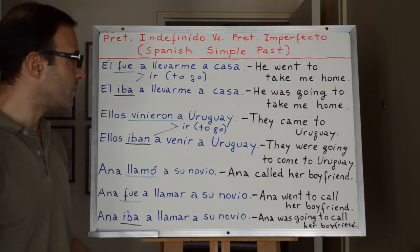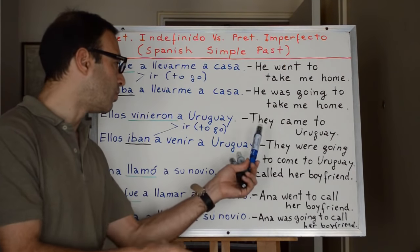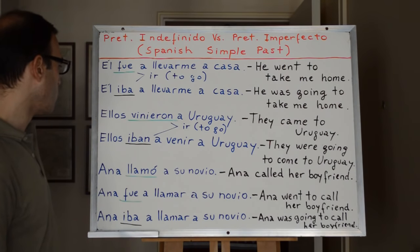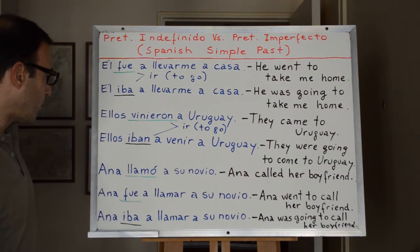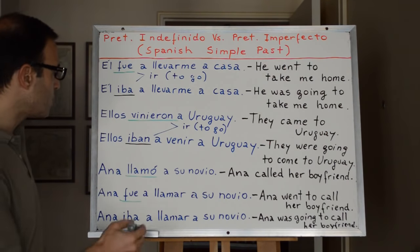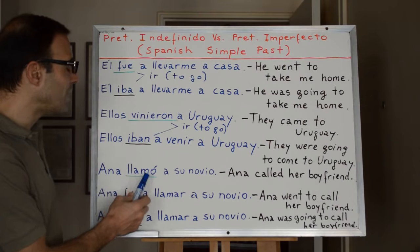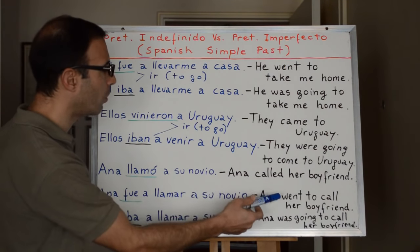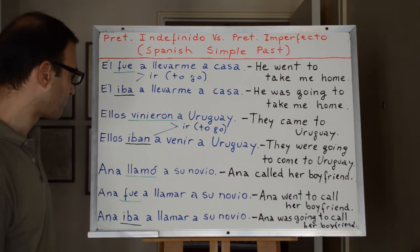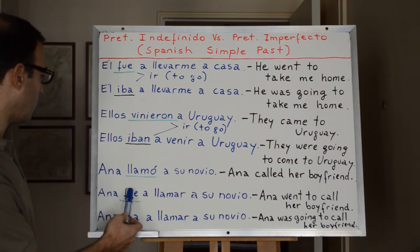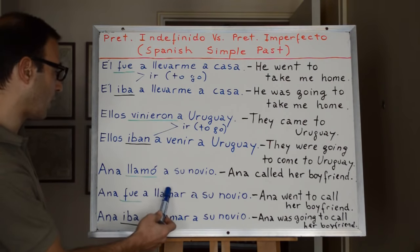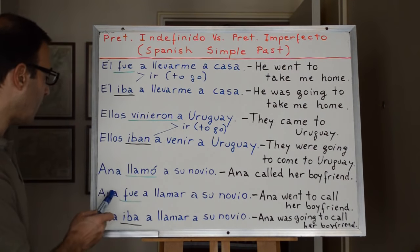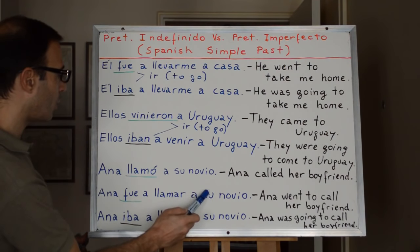The second form, as I mentioned before, suggests that the fact we are talking about may have not actually happened. Now the next example: Ana llamó a su novio. The verb llamar this time means to call. In Spanish, llamar can mean to call or to phone. Ana llamó a su novio can be Ana called her boyfriend or Ana phoned her boyfriend. Now let's add the verb ir to the sentence: Ana fue a llamar a su novio — Ana went to call her boyfriend.